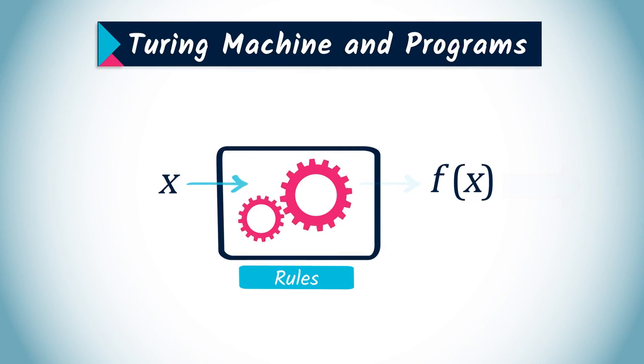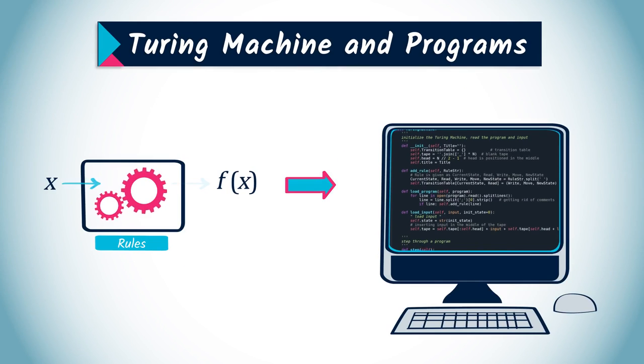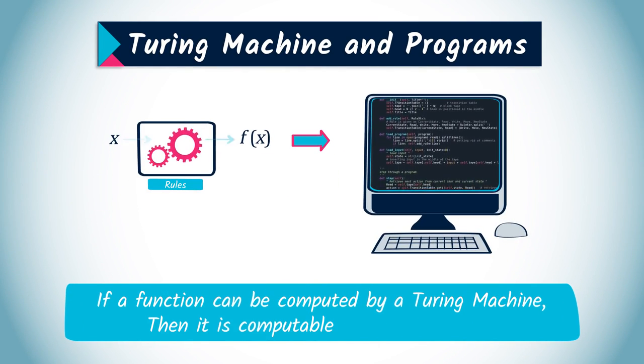It is clear from these examples that the Turing machine is defined as a list of instructions and corresponds to a computer program. This means that any function that can be computed by a Turing machine is computable.